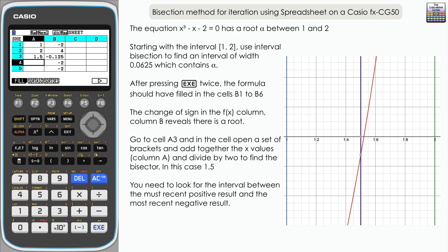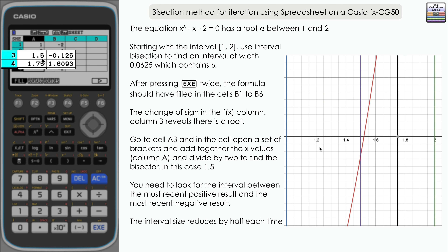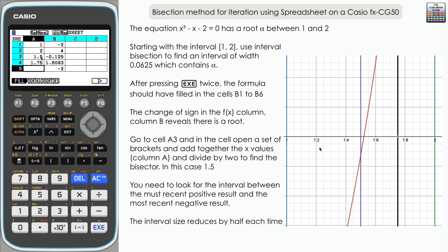For the second iteration we take the most recent negative result — 1.5 — and the most recent positive result — 2 — and add them together and split the difference. That's open brackets, 1.5 plus 2, close brackets, divided by 2, giving us 1.75. That has given us a positive result, which means the root must lie between the interval 1.5 and 1.75. We can see on the graph that it does.